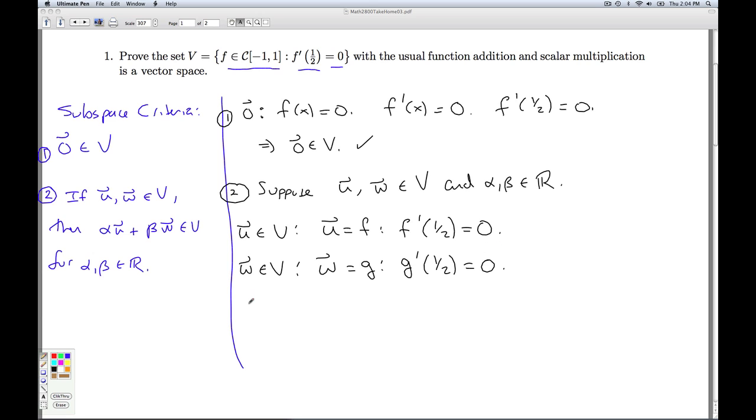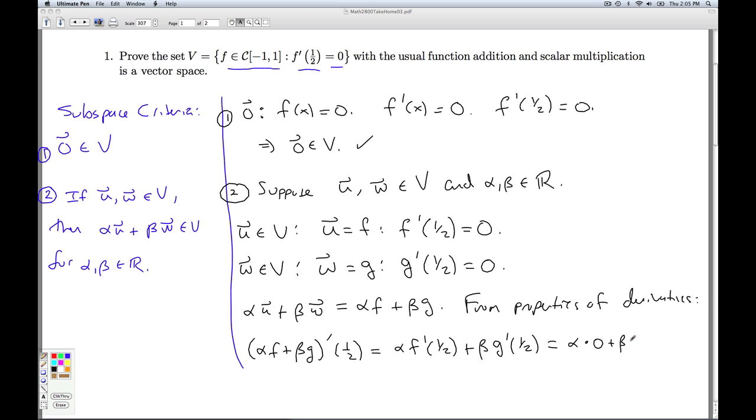So what I need to do is look at the function alpha u plus beta w. That would be the function alpha f plus beta g. Well, from calc 1, we know that if f and g are differentiable at 1/2, then alpha f plus beta g will be differentiable at 1/2. And from properties of derivatives, (alpha f + beta g)'(1/2) = alpha f'(1/2) + beta g'(1/2). So that's alpha times 0 plus beta times 0, which is 0.